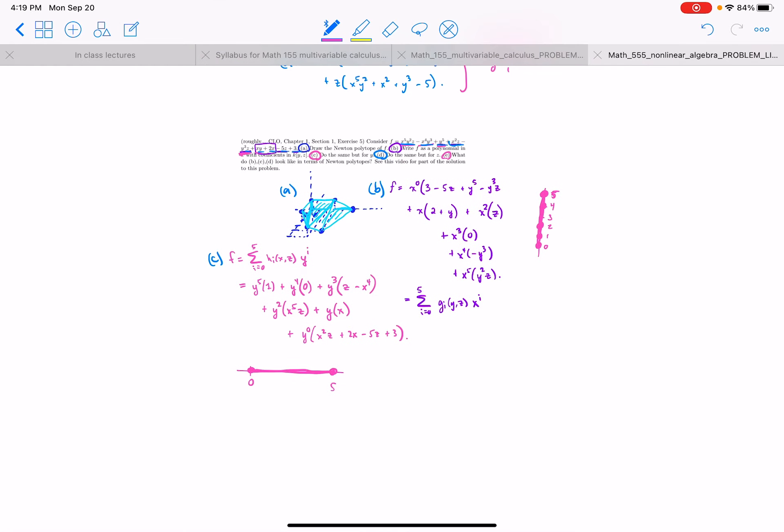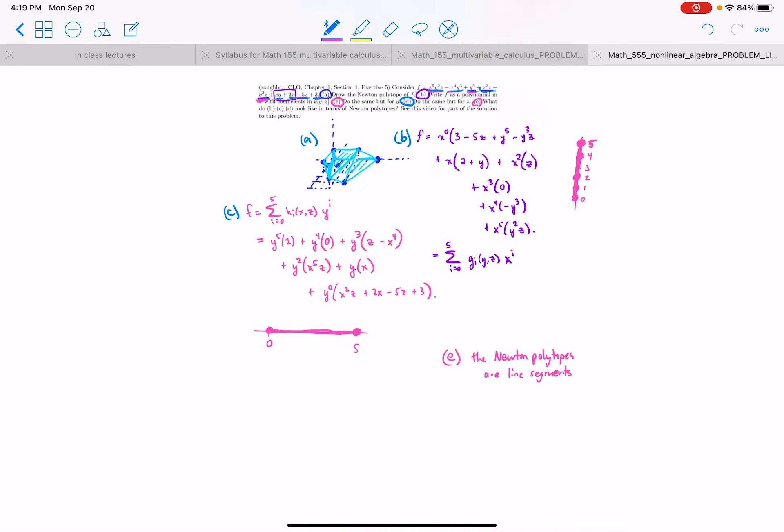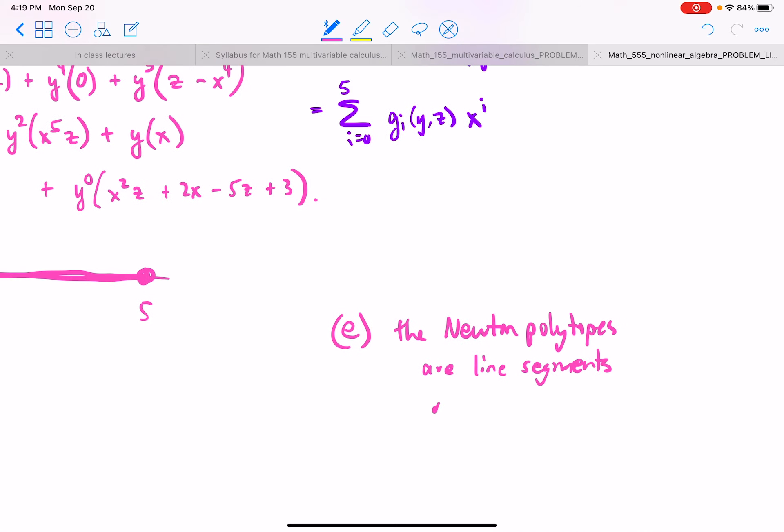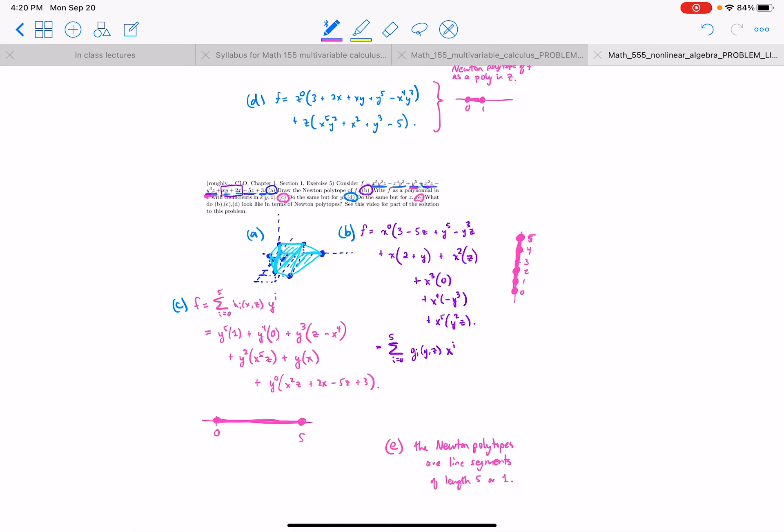So my answer to E then. E, the Newton polytopes are line segments. Segments either of length five or length one. Okay. And I drew them. That's it.